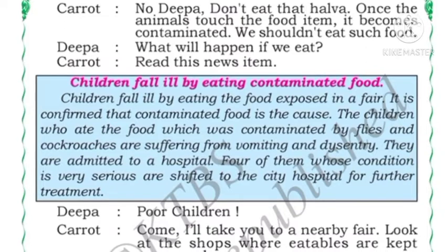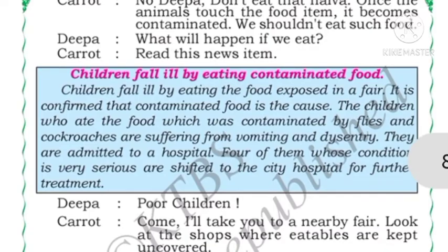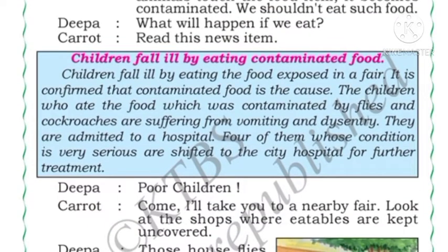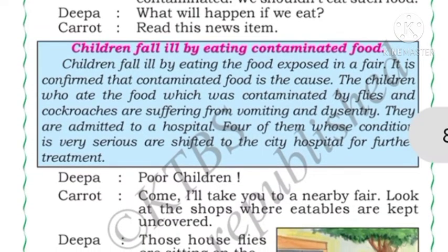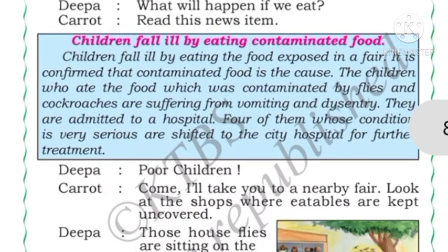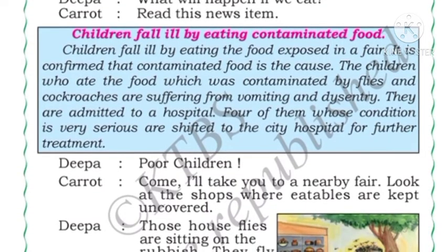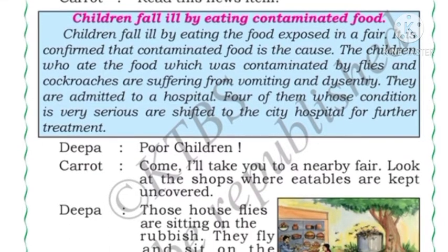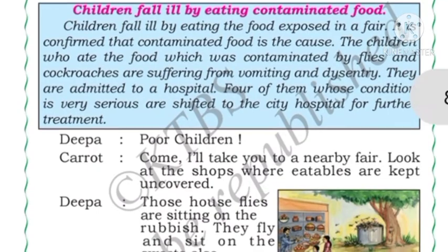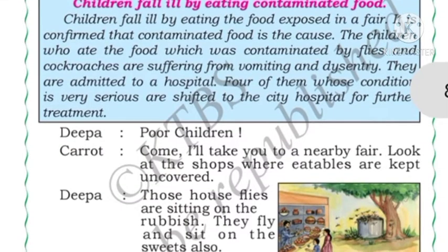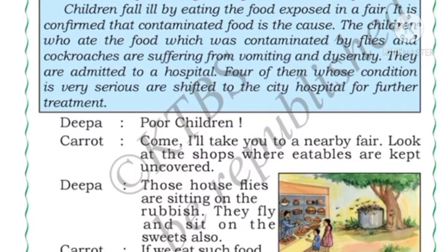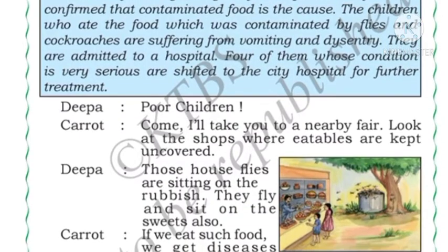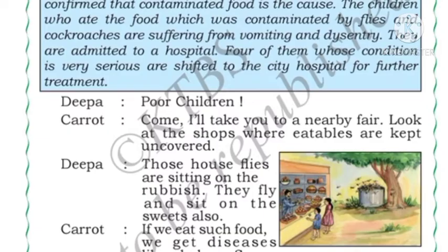Deepa asks what will happen if we eat contaminated food. Carrot shows a news report: children fell ill by eating contaminated food at a fair — they ate food that was open and fell sick. It is confirmed that contaminated food was the cause of their illness. The children who ate food contaminated by flies and cockroaches are suffering from vomiting and dysentery (loose motion) and were admitted to hospital. Four of them in serious condition were shifted to the city hospital for further treatment.